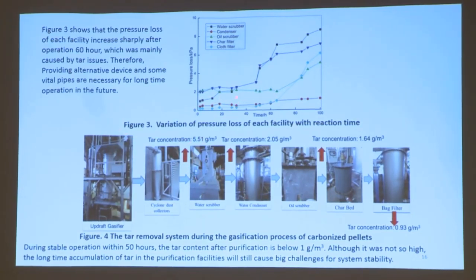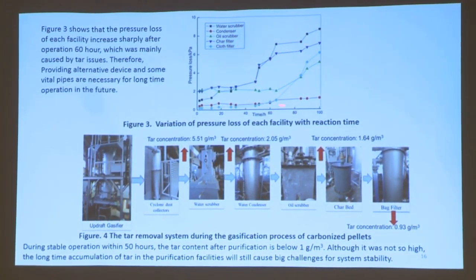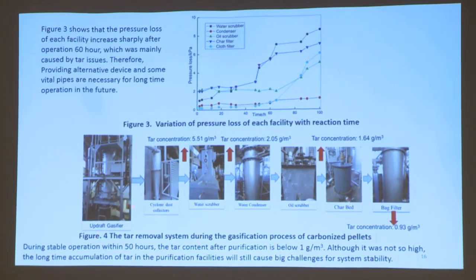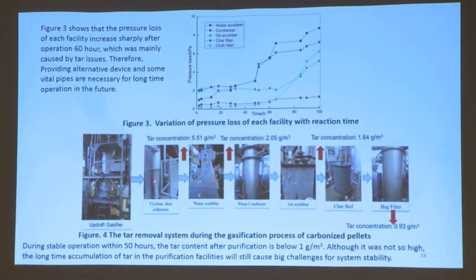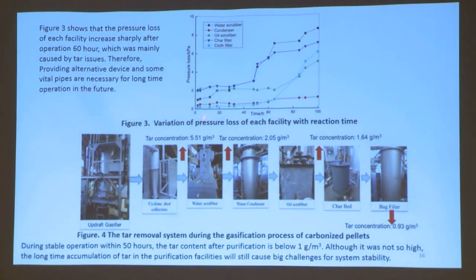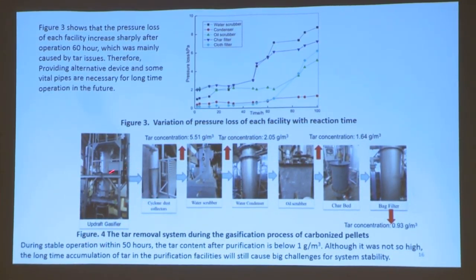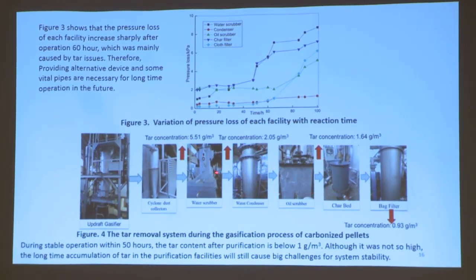Figure 3 shows the pressure loss of each facility. We can see that for each facility, the pressure loss increased sharply after 60 hours. Figure 4 shows the tar removal efficiency of each facility. The tar concentration from the outlet of the cyclone separator was around 5.5 grams per cubic meter. For raw biomass in a fixed-bed gasifier, this value can reach around 15 to 100 grams per cubic meter. Because we utilize carbonized fuel, this value is already low — but after purification, a significant amount of tar still remains in the system, which poses a big challenge for continuous operation.